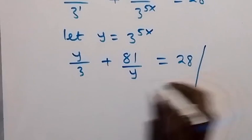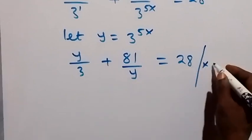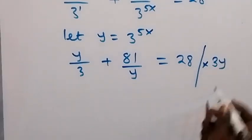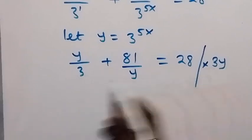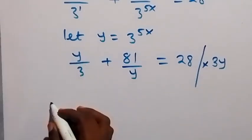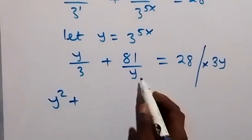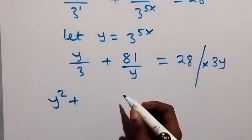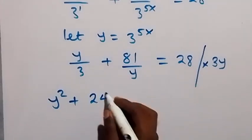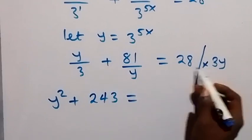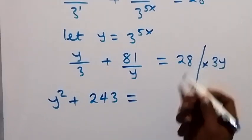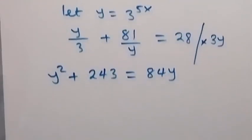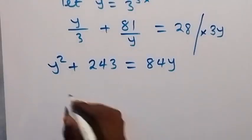The LCM here is 3y, so we multiply through by 3y. When we multiply by 3y: the 3 cancels giving y times y which is y squared; then 3y times 81 over y gives 3 times 81 which is 243; and 3y times 28 gives 84y.